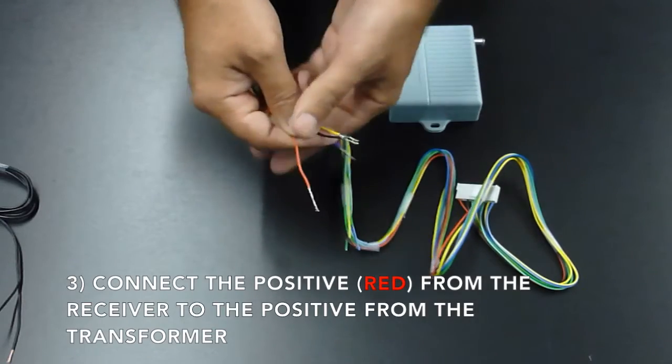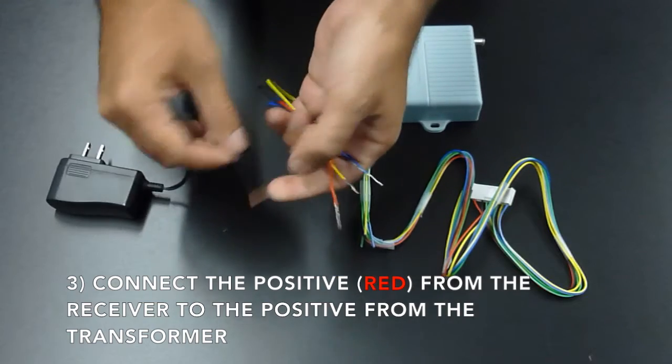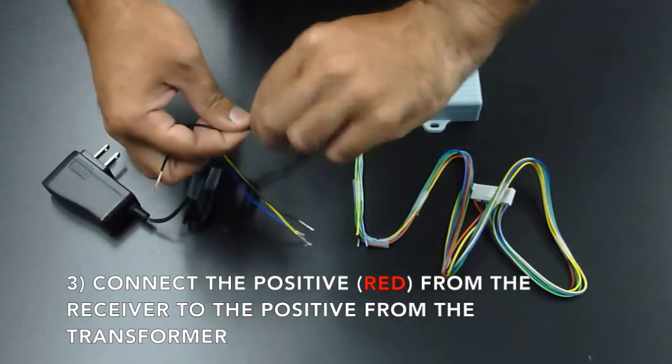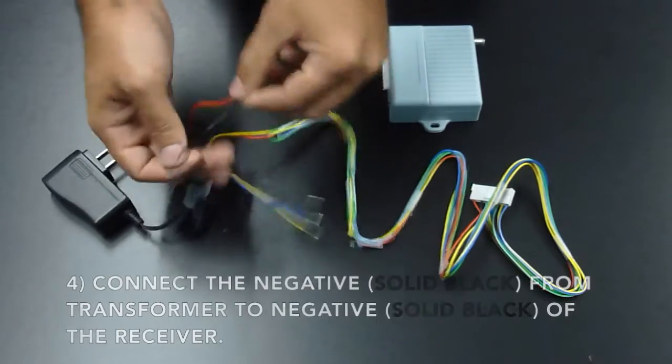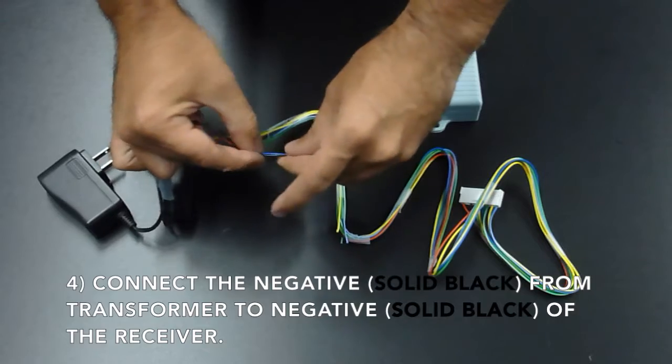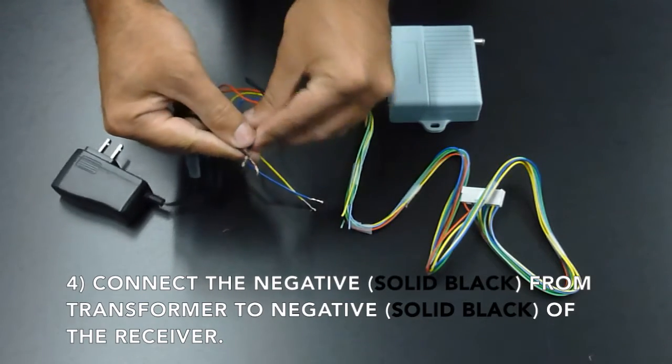Connect the positive red from the receiver to the positive coming from the transformer. Connect the negative solid black from the transformer to the negative solid black from the receiver.